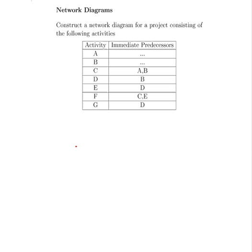So here's my question here. Construct a network diagram for a project consisting of the following activities. So we have seven projects there: A, B, C, D, E and F.